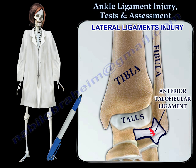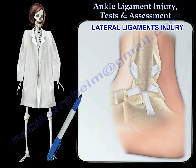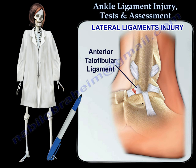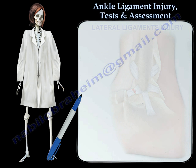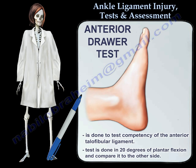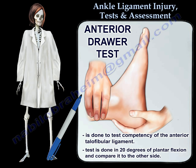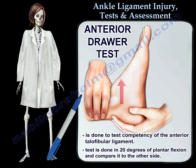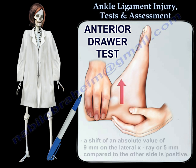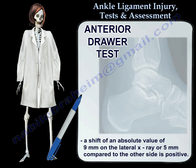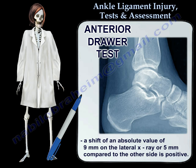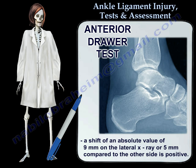The anterior talofibular ligament is the weakest ligament on the lateral side. The anterior drawer test is done to test the competency of the anterior talofibular ligament. The test is done in 20 degrees of plantar flexion and compared to the other side. A shift of an absolute value of 9mm on the lateral x-ray, or 5mm compared to the other side, is positive.